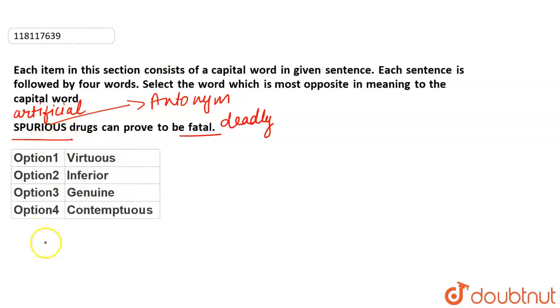So here we have to find out the opposite of artificial meaning. So our first option is Virtuous. Virtuous means very good, or religious kind of thing, which is virtuous, so this is not opposite.